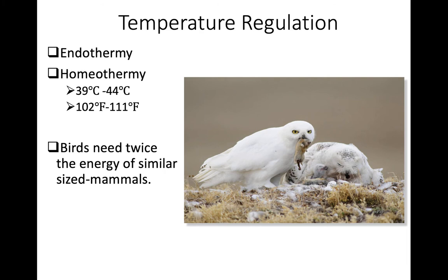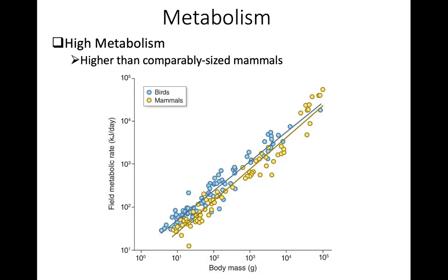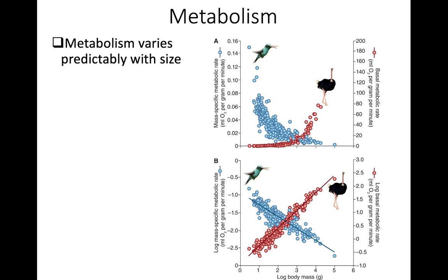Birds need twice the energy of similar-sized mammals to maintain that high metabolic rate. If you look at body mass and how it relates to field metabolic rate, there is a positive relationship for both mammals and birds, but the line for birds is above that of mammals. This is on a log scale, so a small difference represents quite a bit of difference in metabolic rate for any given size. Metabolic rate does vary with size.